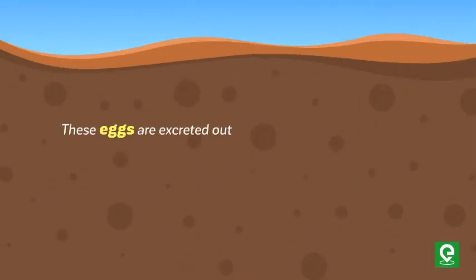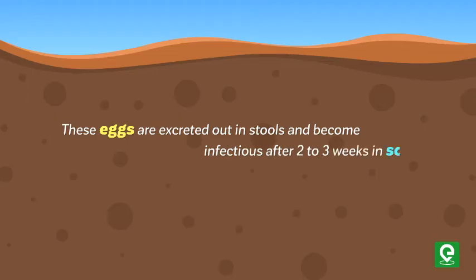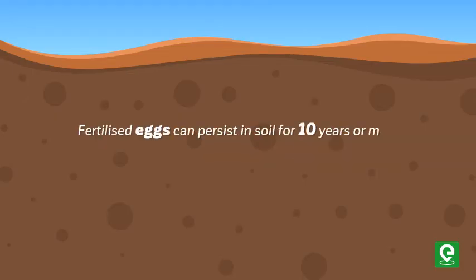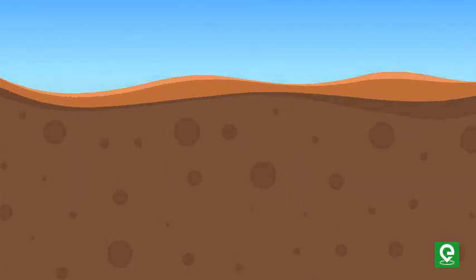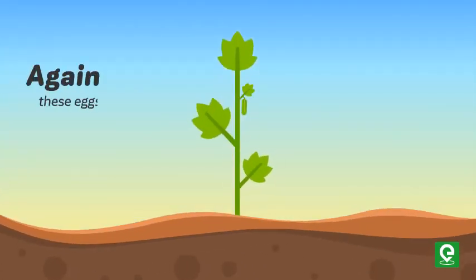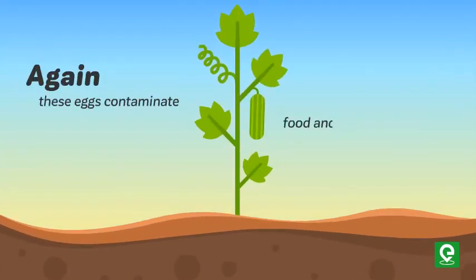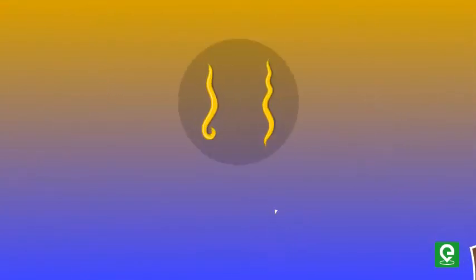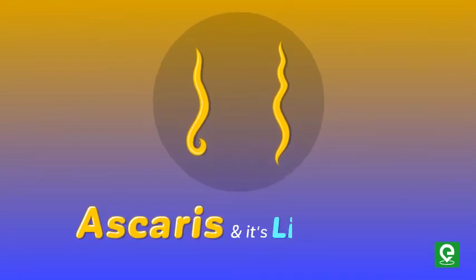The female worm produces 2 lakh eggs per day for 12–18 months. These eggs are excreted out in stool and become infectious after 2–3 weeks in soil. Fertilized eggs can persist in soil for 10 years or more. Again, these eggs contaminate food and the cycle restarts. This concludes our video on Ascaris and its life cycle.